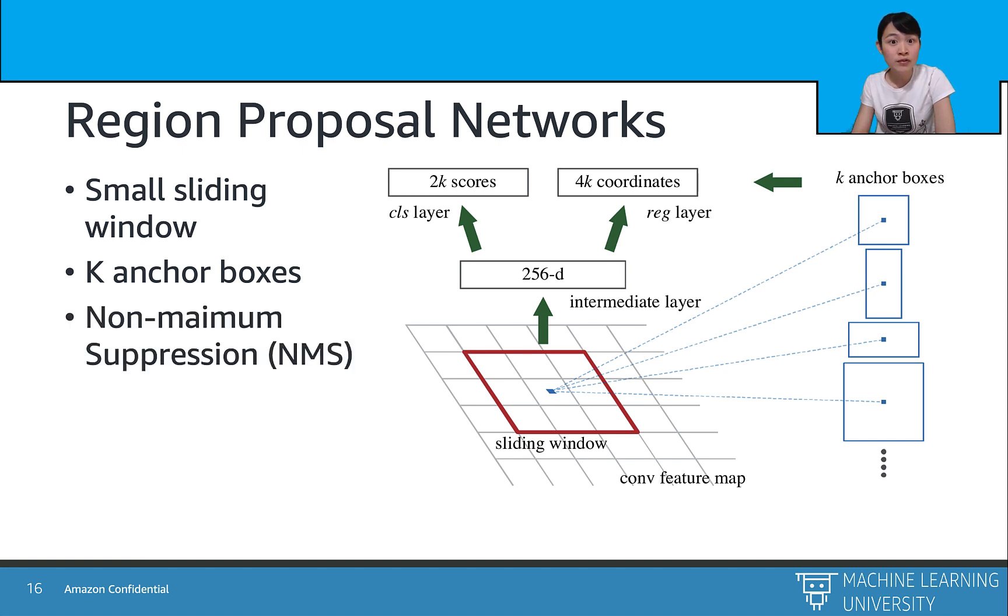Some RPN proposals highly overlap with each other. To reduce the redundancy, we adopt the non-max suppression, or NMS, on the proposal region based on their classification scores, which leaves us about 2000 proposal regions per image in the end.